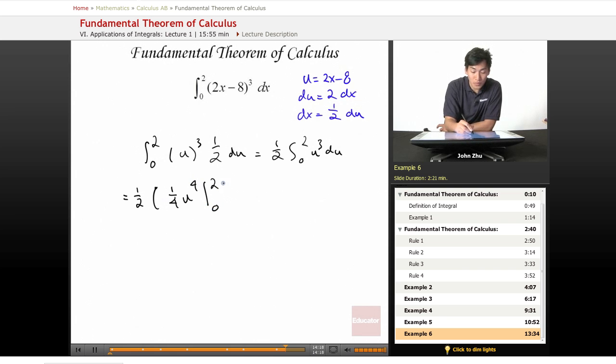So don't forget to substitute this back in. We'll have times 1 over 4, which we can just pull out of that equation. 1 times u to the, substituting u, 2x minus 8 to the 4th, evaluated at 0 and 2.